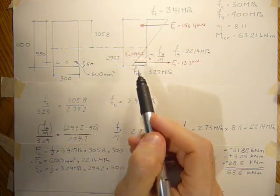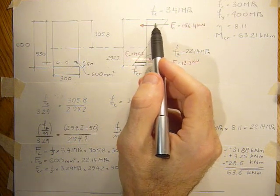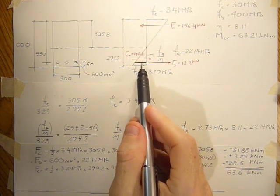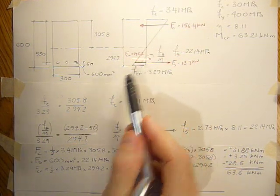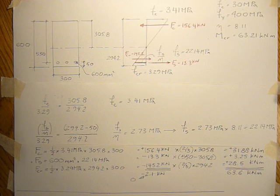So all you have will be the stress in the concrete in the top above the neutral axis and then the tensile steel below the neutral axis.